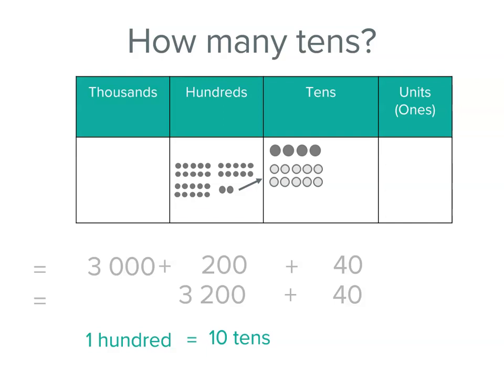So I've actually got 32 hundreds. Remember, there's three groups of 10 plus another two. If 100 is 10 tens, I can multiply 32 by 10. 32 hundreds is 32 times 10 tens or 320 tens.